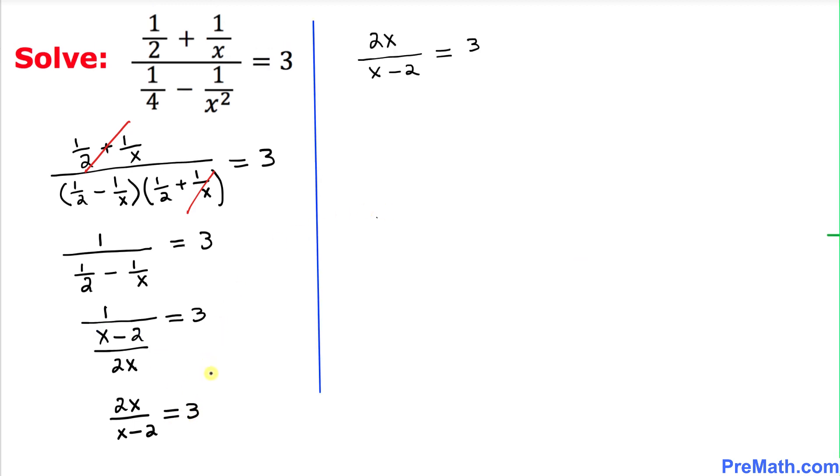Since we are running out of space on the left hand side, I have copied down this part over here. Let me make 3 as a fraction as well by just putting a 1 underneath. Now we can simplify by crisscross method. When we cross multiply, 2x times 1 gives us 2x equals, and the other way around, 3x - 6.